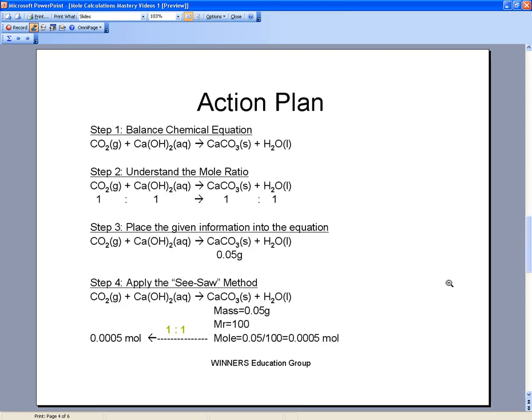Let's take a look at the action plan. In the first step, you need to come up with a balanced chemical equation when carbon dioxide reacts with limewater, which is essentially calcium hydroxide. In this reaction, you'll produce the calcium carbonate precipitate, which is a solid, and water.